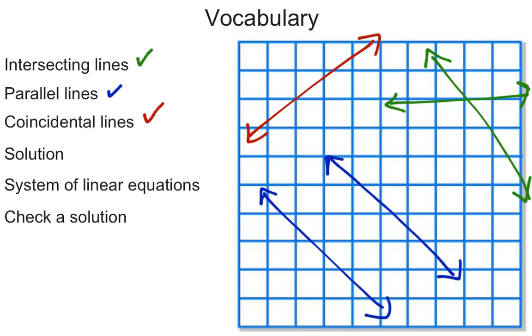A solution, or for this unit, a solution to a system of linear equations, is just going to be any point that satisfies both equations at once, or both of the lines at once.